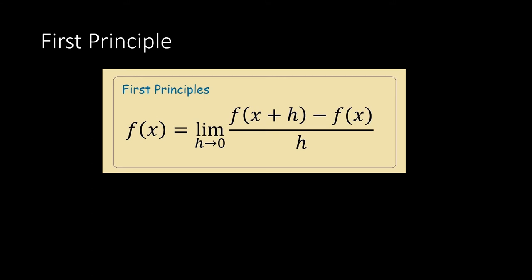I'm sure we are all familiar with the First Principle formula by now. The derivative of f(x) is: the limit as h approaches 0 of f(x+h) minus f(x), all over h.